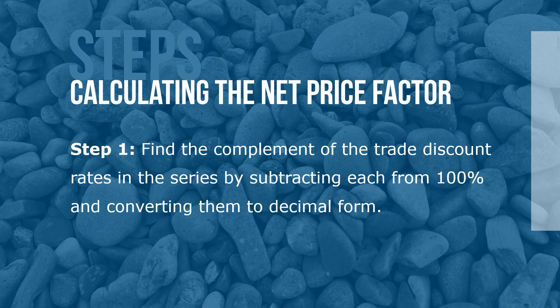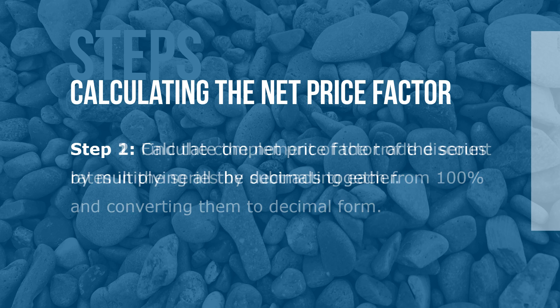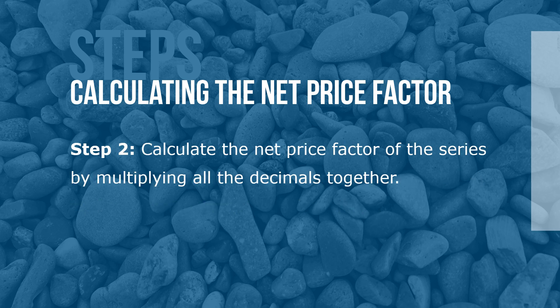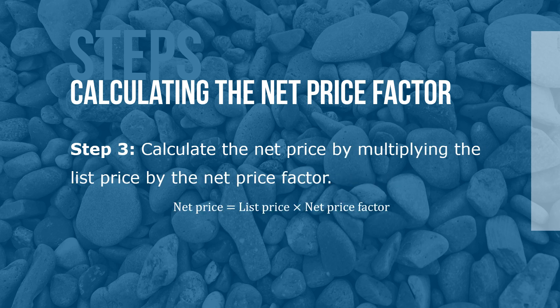Here are the steps for calculating net price by using the net price factor. Step 1: find the complement of the trade discount rates in the series by subtracting each from 100% and converting them to decimal form. Step 2: calculate the net price factor of the series by multiplying all the decimals together. Step 3: calculate the net price by multiplying the list price by the net price factor using this formula.